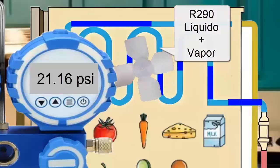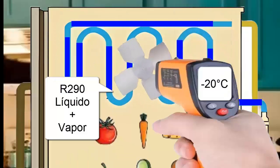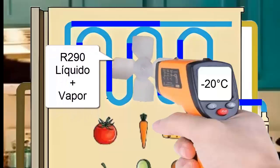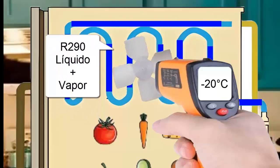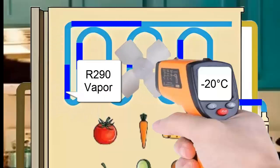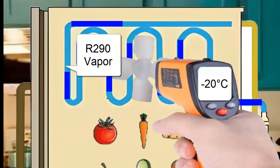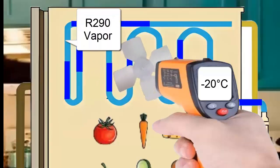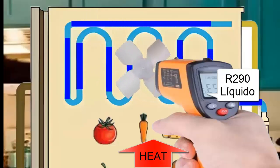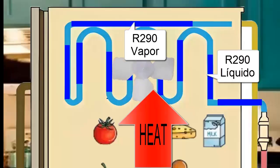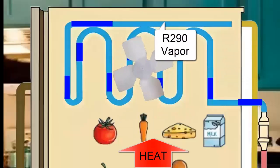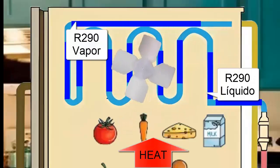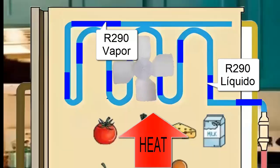With this low temperature and the assistance of the fan, the heat from the products inside the equipment quickly transfers to the R290 refrigerant, causing it to evaporate. As the R290 refrigerant absorbs the heat from the stored products, they cool down, allowing for preservation.